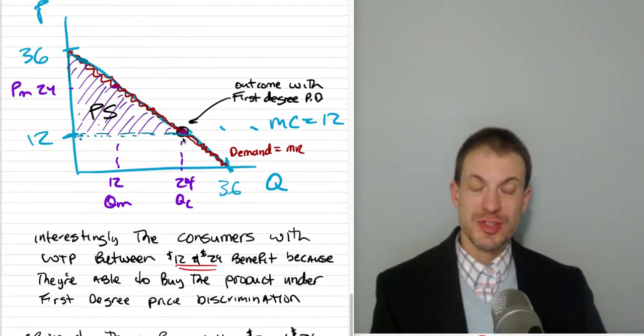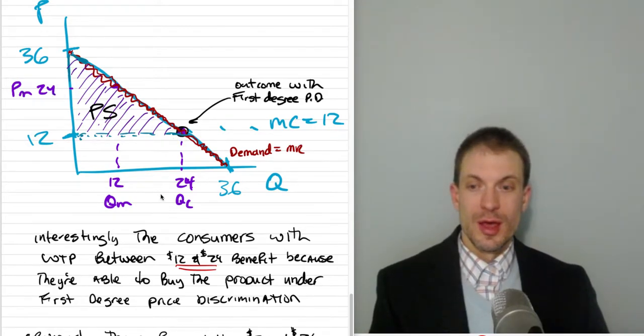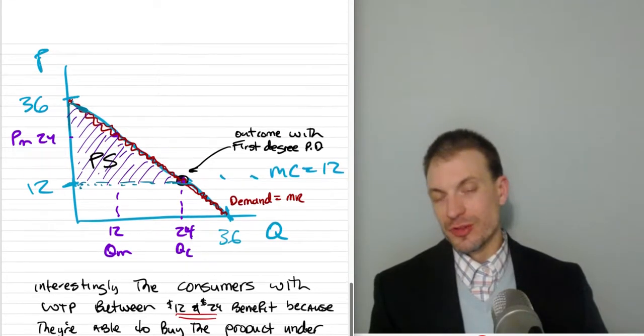That's part of deadweight loss if we have a single price monopolist that's setting the price of 24. So they benefit from our first-degree price discrimination regime.